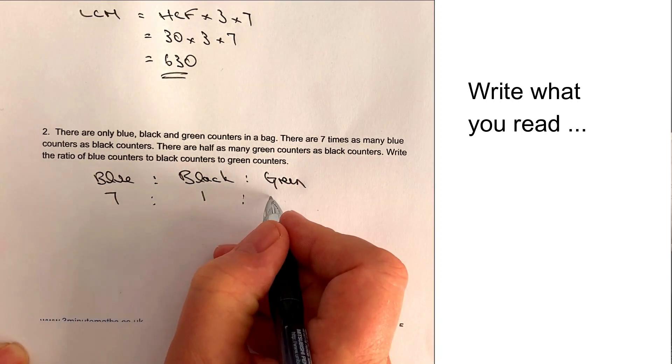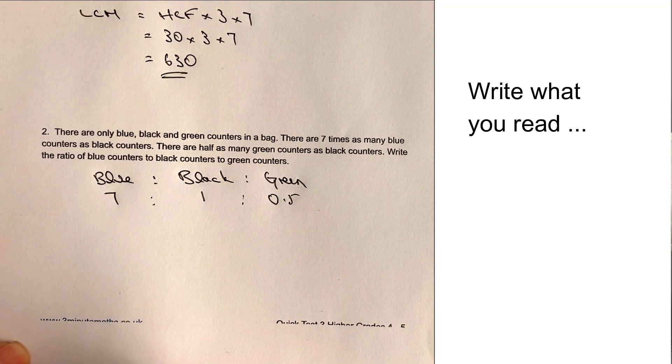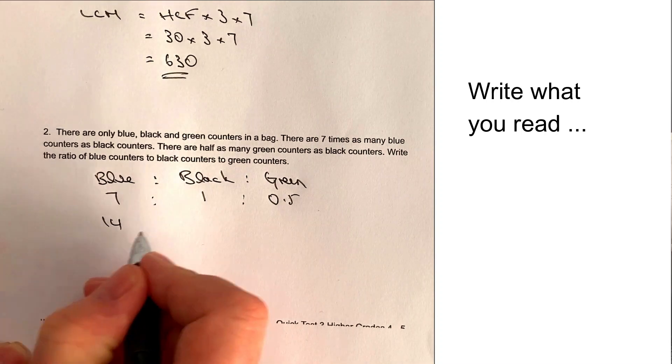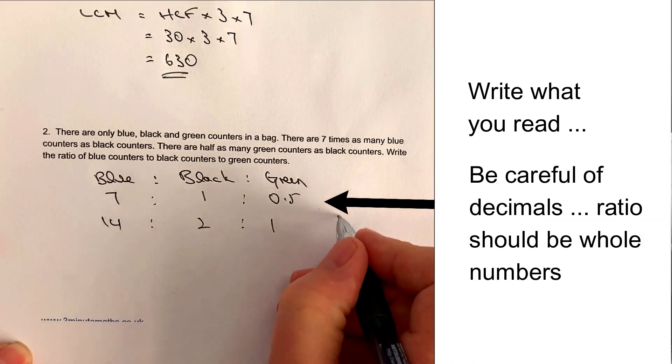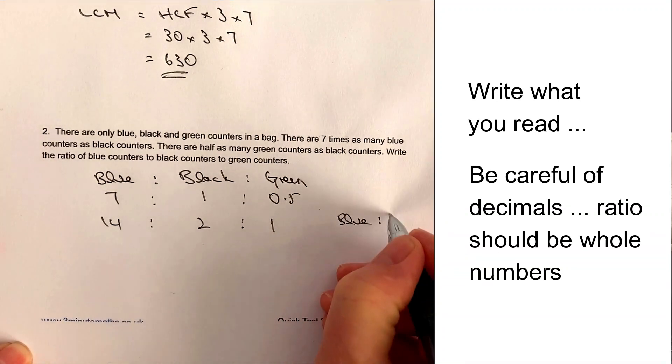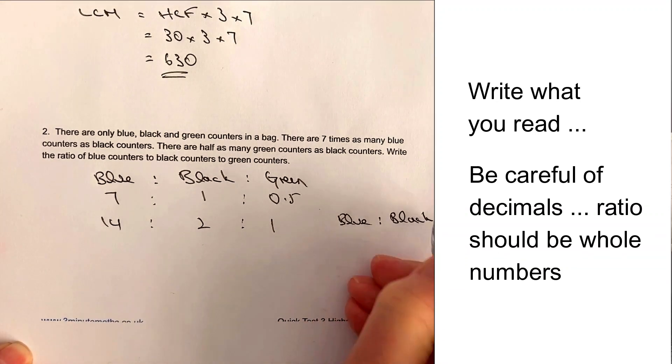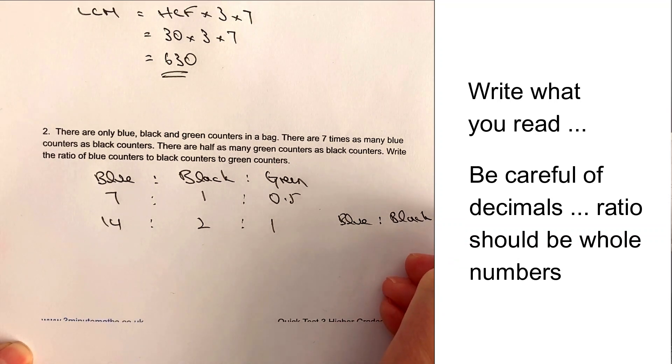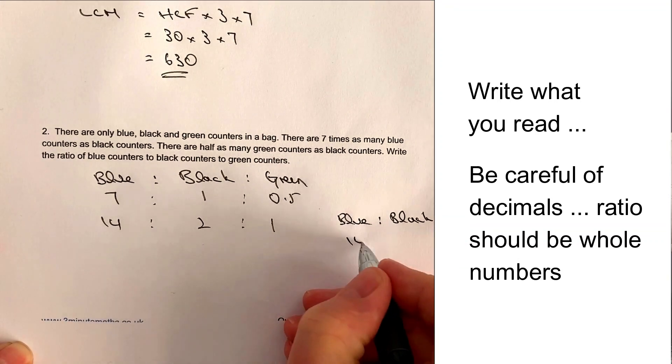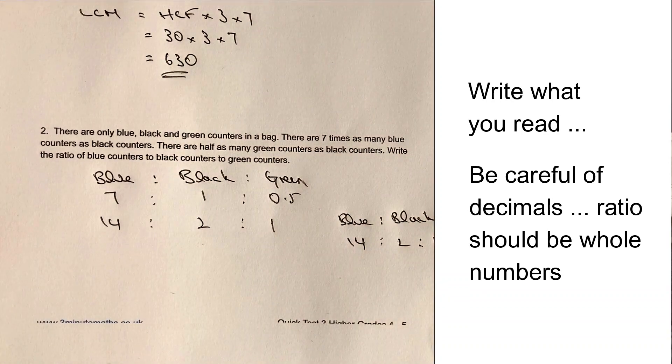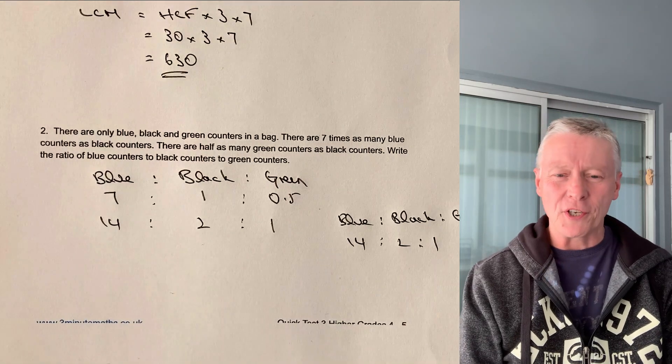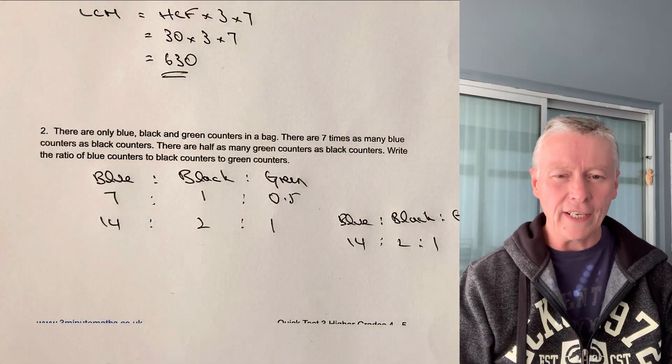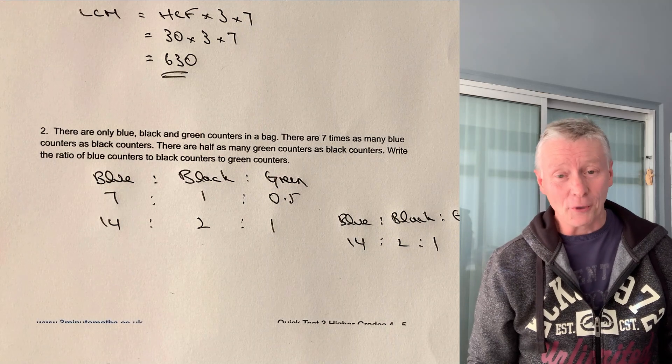So what I'm going to do is I'm just going to write blue to black to green. Then reading this through, if we have one black, it means we've got seven blue. But it also means we've only got half a green. Well, we can't have half a green counter. So what I'm going to do is just double everything up. I get 14 to 2 to 1, which is actually the blue to black to green ratio. And that would be the answer to that particular question. So it's fairly straightforward, but you do have to make sure you read the question through thoroughly.